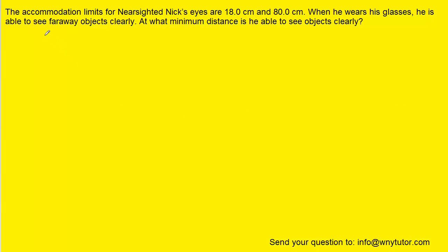When the question states that nearsighted Nick can see far away objects clearly, the word far away suggests that the object distance, which is denoted as p, is going to be essentially infinity. It's a very large number for the object distance.